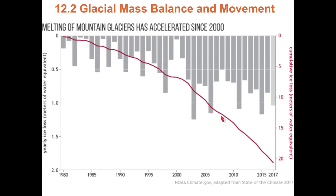Globally, about 95% of mountain glaciers are in retreat. Looking at the mass balance from 1980 to the present, there wasn't a single year where alpine glaciers had a positive balance — where they gained more ice than they lost. If they had, the bar would stick up above the zero line.